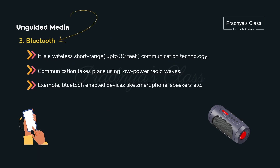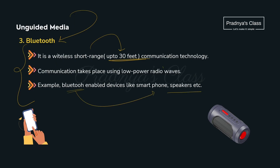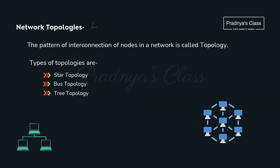The last unguided medium is Bluetooth. It has a short range of up to 30 feet. Examples include smartphones and speakers. It is a radio wave with low power. Moving ahead to the fourth important topic — network topologies. Topology means the design of the nodes in a network.